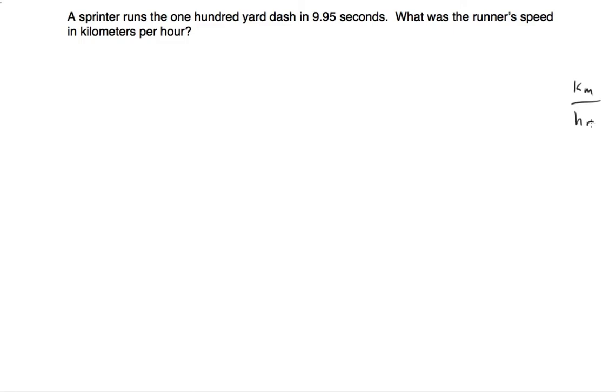Again, this is a complex unit, so we want to take the 100-yard dash in 9.95 seconds and set it up so that distance, kilometers, is what the distance we want. So we're going to take 100 yards and we're going to put time, because we want time in hours on the bottom, we're going to put 9.95 seconds on the bottom. So we're going to set it up that way.